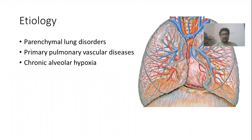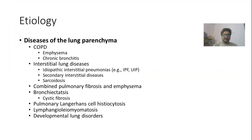Etiology can be broadly classified into three groups. Cor pulmonale basically occurs either due to parenchymal lung diseases, diseases of the pulmonary vessels, or due to chronic alveolar hypoxia. Diseases of the lung parenchyma responsible for cor pulmonale include COPD, interstitial lung disease, combined pulmonary fibrosis and emphysema, bronchiectasis, pulmonary Langerhans cell histiocytosis, and other developmental lung disorders.